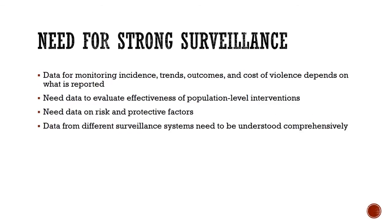We also recognize a need for strong surveillance. Data for monitoring incidents, trends, outcomes, and the cost of violence depends on what is currently recorded, and these reporting mechanisms vary from municipalities to states across the country. In order to fully understand the breadth and scope of violence that is occurring, as well as trends, we need consistent standardized data for monitoring, evaluating the effectiveness of population-level interventions, understanding risk and protective factors across different populations, and comprehensively understanding data from different types of surveillance systems.